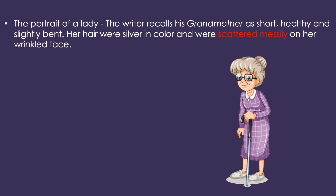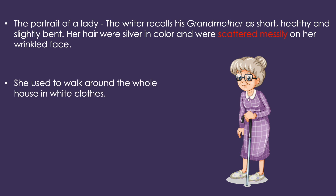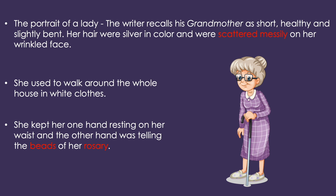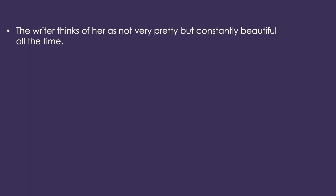In A Portrait of a Lady, the writer recalls his grandmother as short, healthy, and slightly bent. Writer apni grandmother ko yaad karte huye kahte hain ki war chhote katki, moati aur thodi si juki dikhti thi. Her hair were silver in color and were scattered messily on her wrinkled face. She used to walk around the whole house in white clothes. She kept one hand resting on her waist and the other hand was telling the beads of her rosary. The writer thinks of her as not very pretty but constantly beautiful all the time.